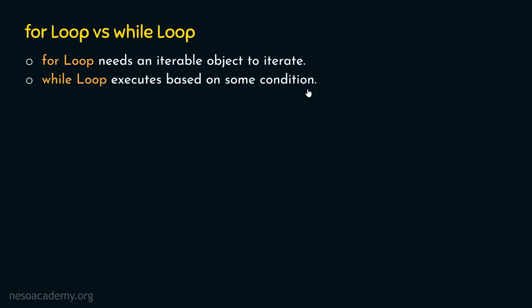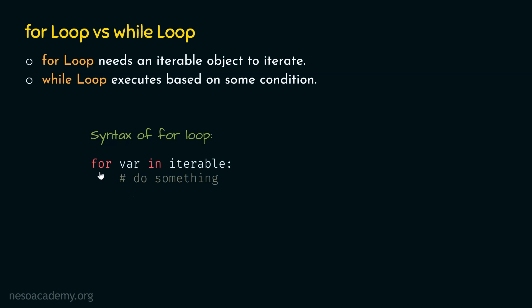While writing the while statement, we need to provide the condition, and on the basis of that condition, the while loop will execute. Now let's see the syntax of for loop first, and then we will see the syntax of while loop. This is how the syntax looks like: for var in iterable, do something. The statements inside for loop will be executed based on this iterable object. We need to provide an iterable object here, and this iterable object will decide the number of iterations.